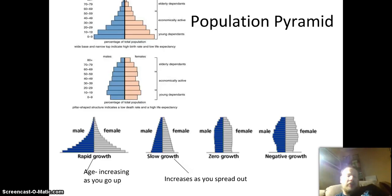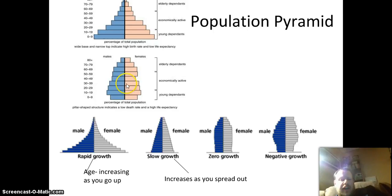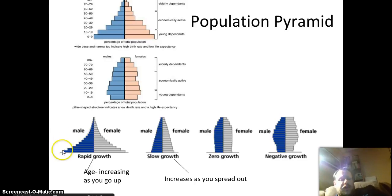We measure population through what's called the population pyramid. One side is female, the other side is male, with ages listed and a bar graph showing population. Looking at this graph, of ages 80 plus, there are a lot more females than males; ages 10 to 19 are pretty equal. You can tell by the shape of the graph if your population is increasing. Rapid growth means a lot of young people at the bottom — as they grow up, they'll have babies and the triangle keeps increasing.